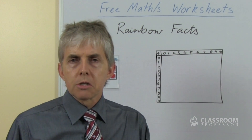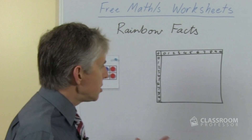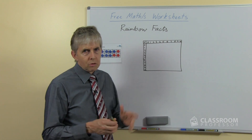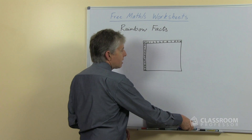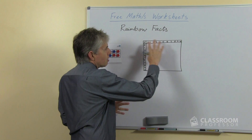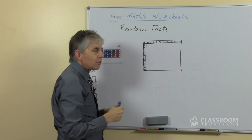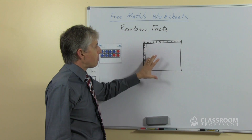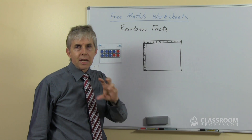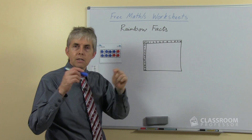Another activity that students can do to investigate the rainbow facts — the pairs of numbers that add to 10 — is to use a number fact grid. I've drawn this by hand so I haven't drawn all the lines, but I'm sure you'll get the idea. It's a standard grid; I've included 0, so it's actually 11 by 11 plus the borders. We could ask students, with a blank grid of just squares, to find all the places where 10 would appear — in other words, all the places where the pair of numbers being added equals 10.